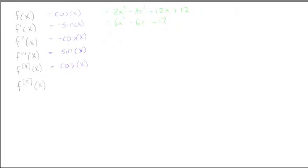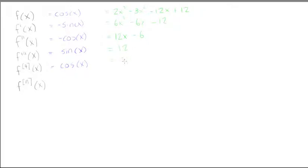The second derivative is just the derivative of the first derivative, which gives us 12x - 6. If we differentiate again, the third derivative is 12. And the fourth derivative would just become zero — that's as far as we can go.